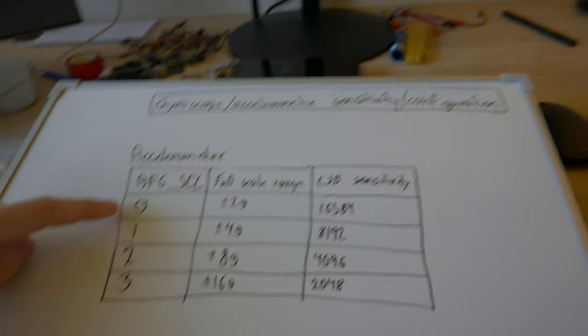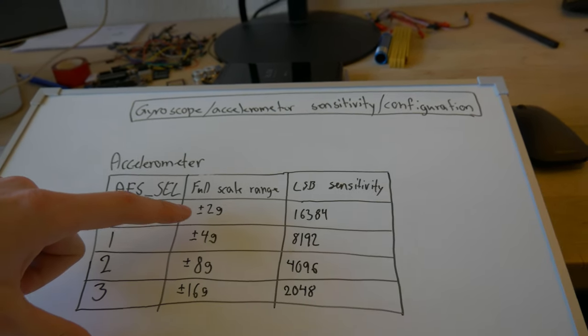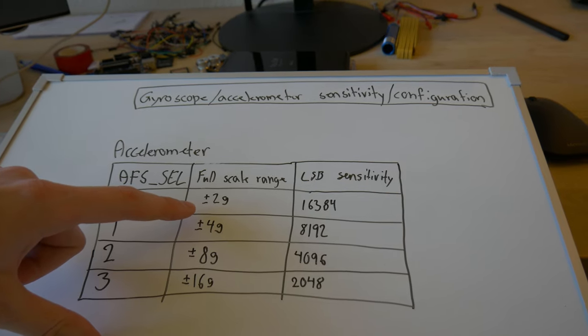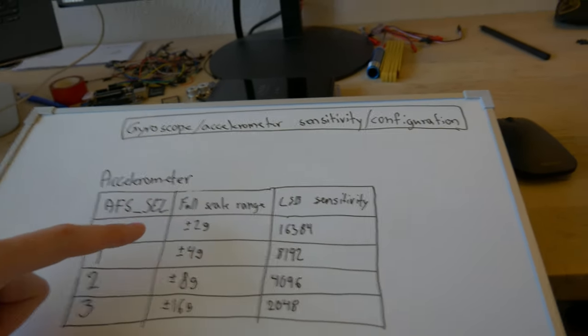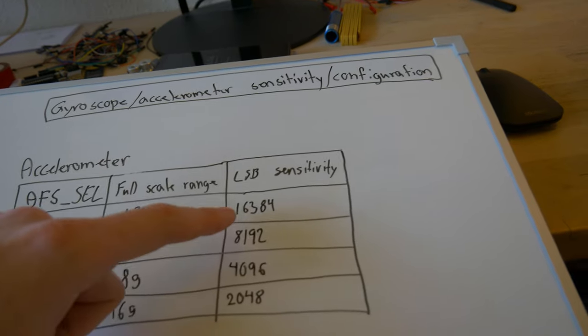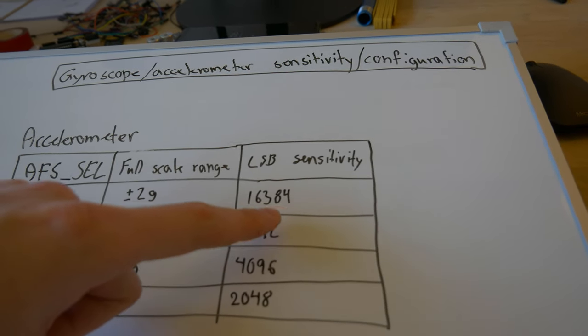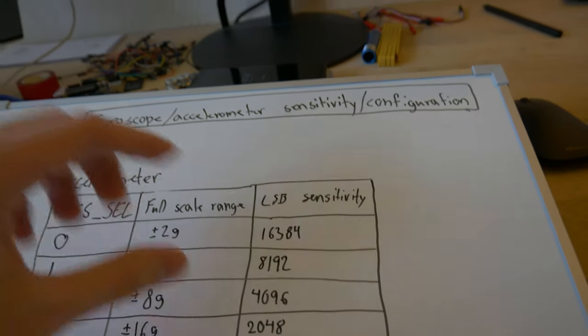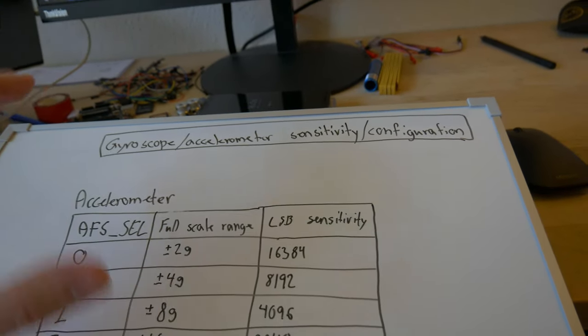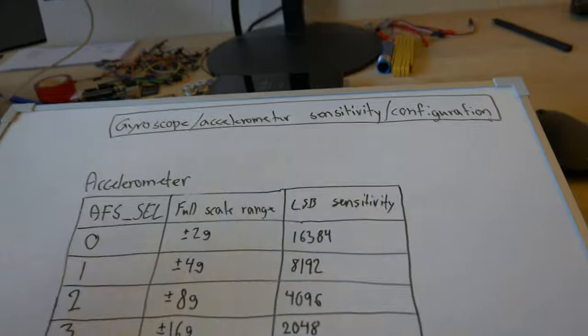This basically means what the outer limits of the accelerometer output can be. By default it's zero and that means the range can go from plus and minus two G's, which gives you a sensitivity of 16,384 sensitivity levels per G.